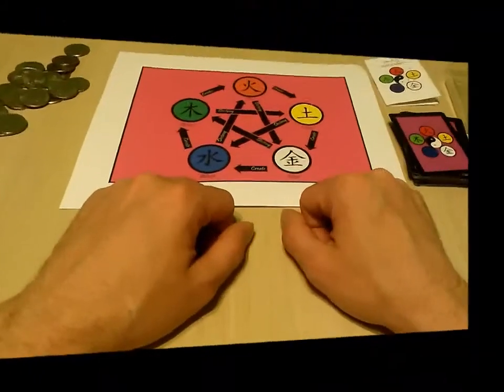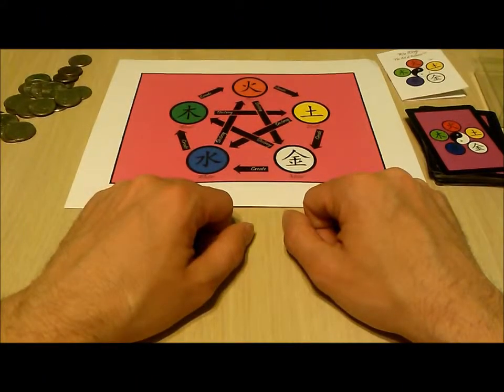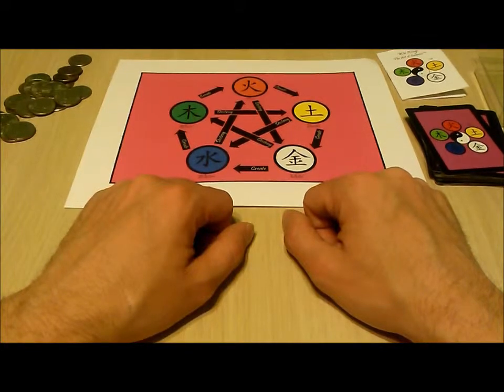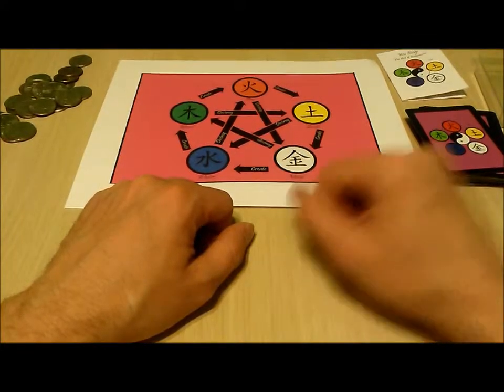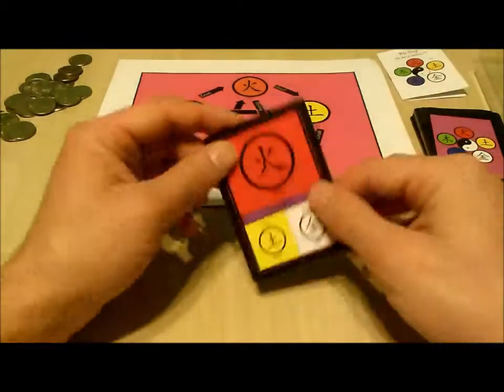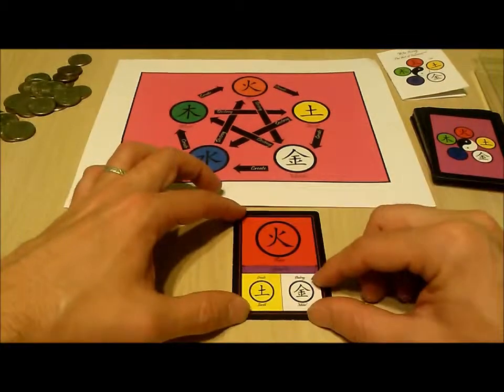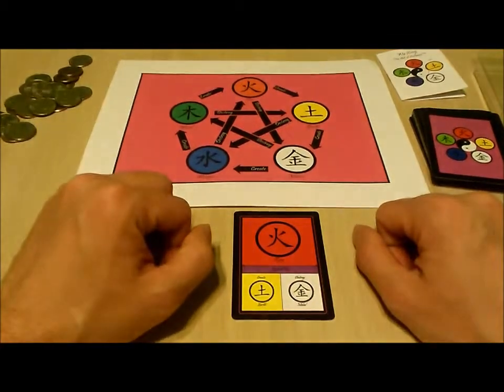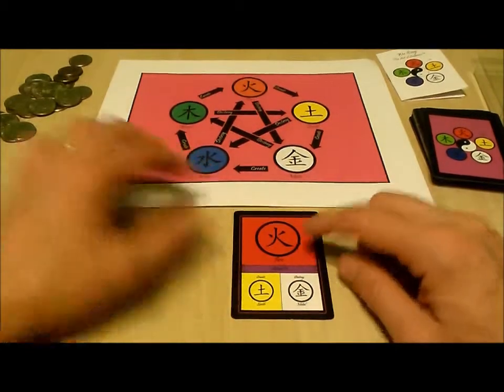In the deck there are seven cards for each element and one dragon card which we'll discuss later. When you play a card you have three choices. At the top of the card is an element. You can place the token on that element. For example, you can play a fire card and place the token on the fire space.